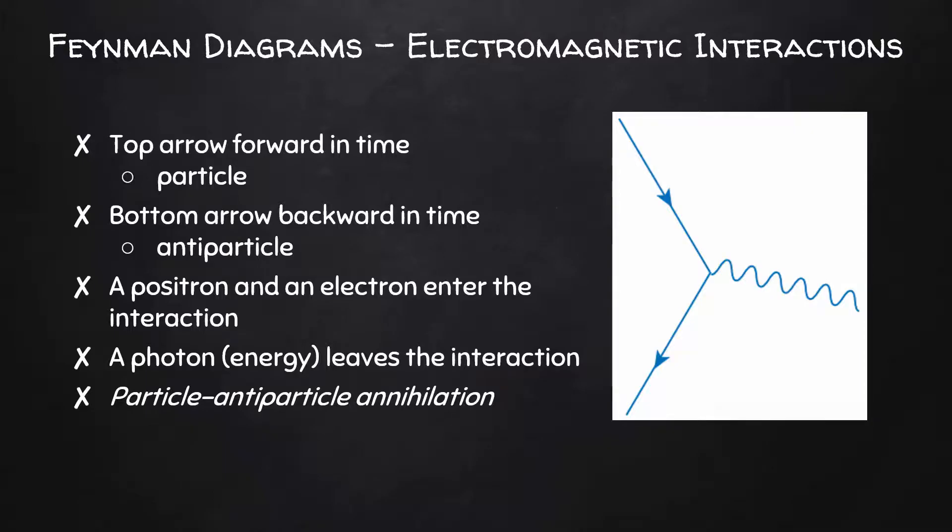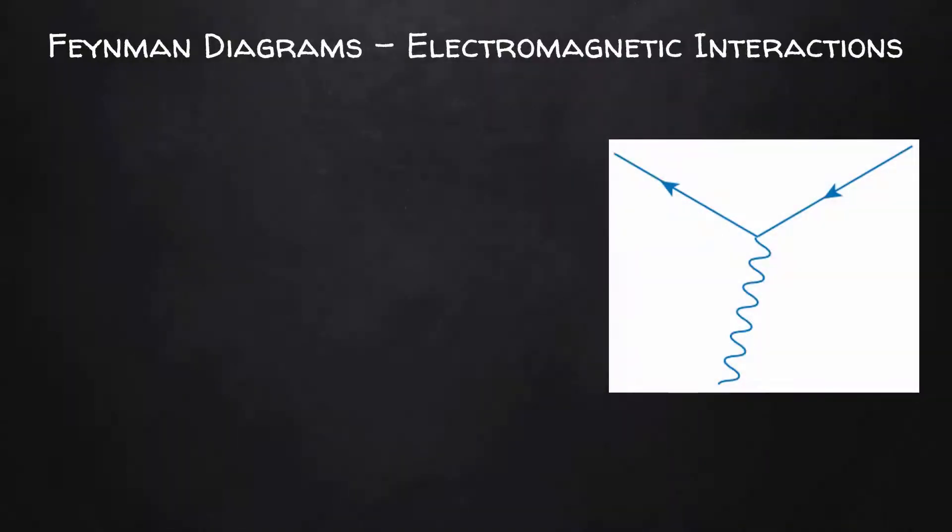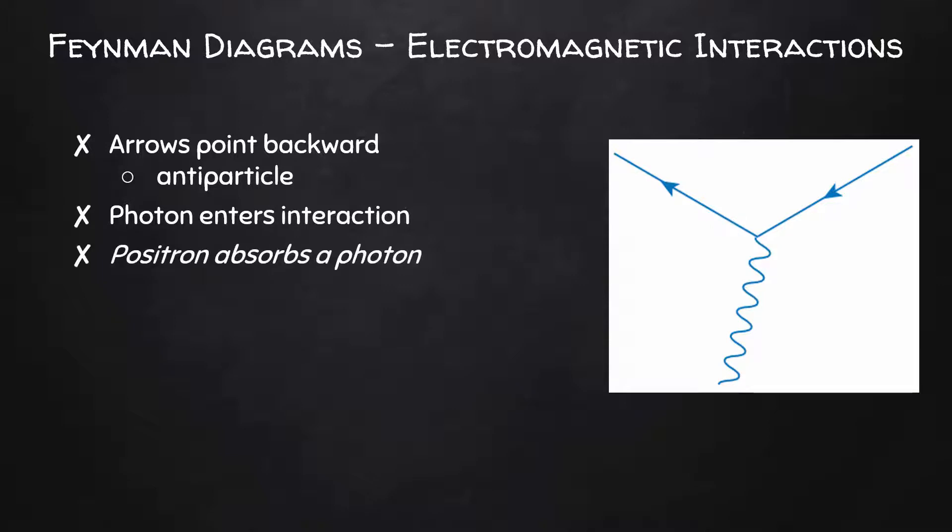Let's take a look at one more. This is the mirror image of the original Feynman diagram. Here, both arrows point backward. This represents an antiparticle the whole time. We can see that there's a photon that enters the interaction. We can interpret this as a positron, which is an antiparticle, absorbing a photon. There are so many other electromagnetic interactions that can be represented by Feynman diagrams, and of course, we will look at more examples of these.